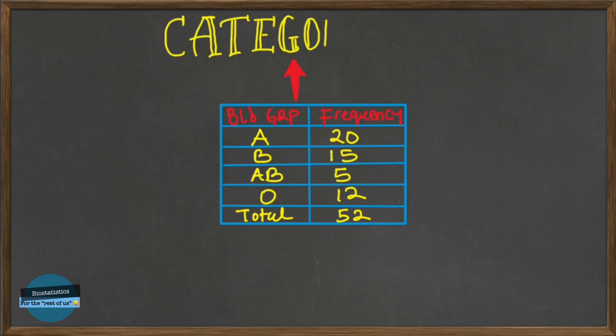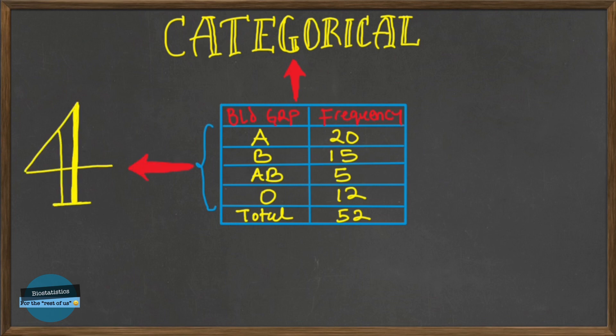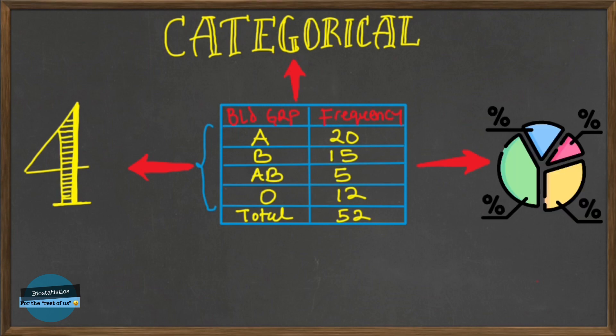So with this categorical variable, how many categories or how many values does it have? Looking at it critically, we can see that it has four categories. So when we have a categorical variable, a pie chart can be used to graphically represent the data from categorical variables.